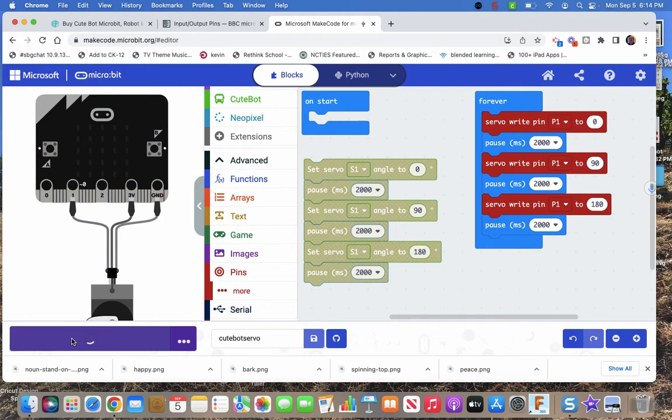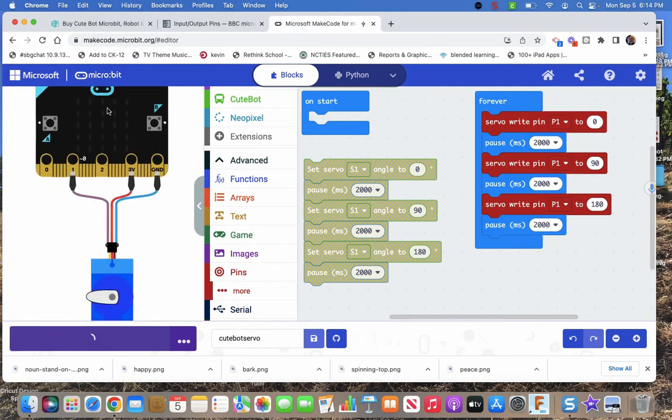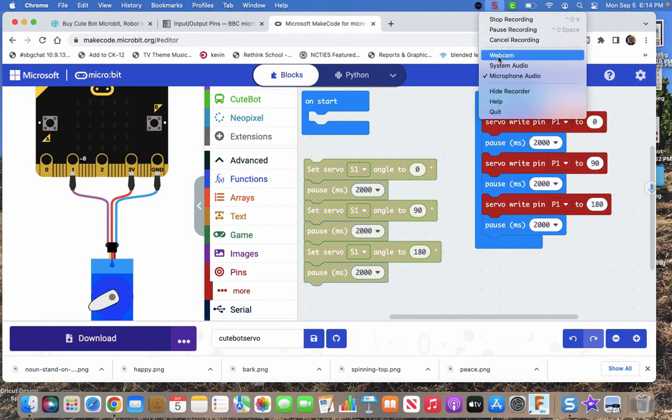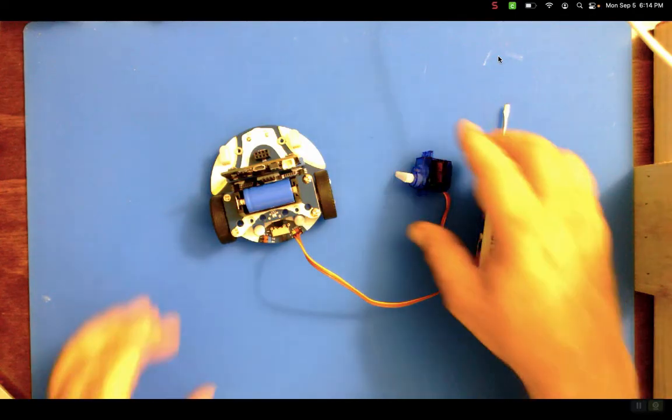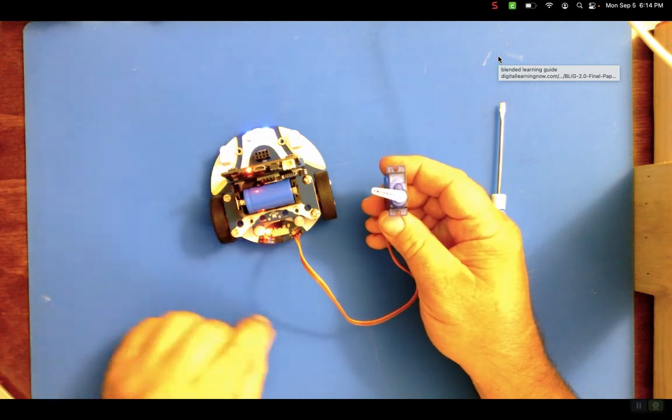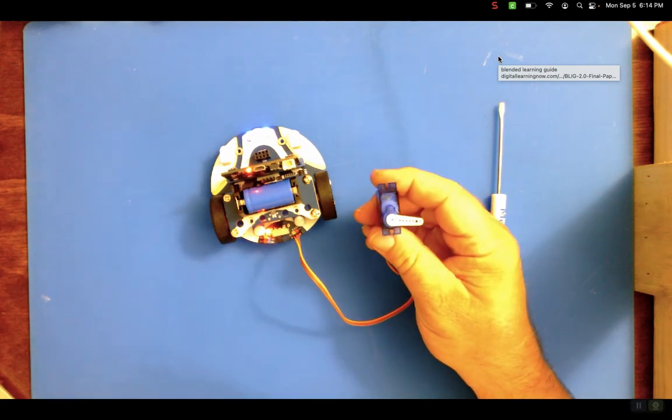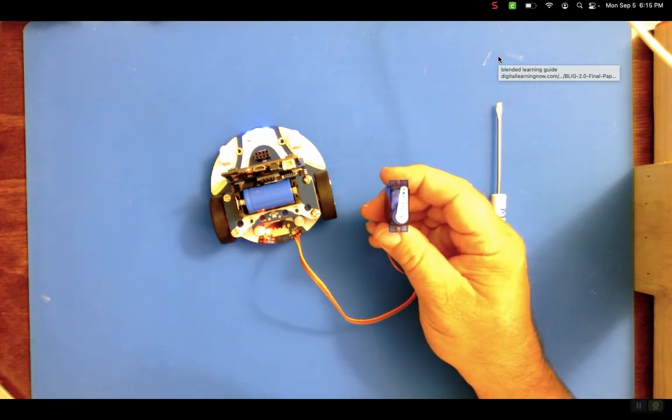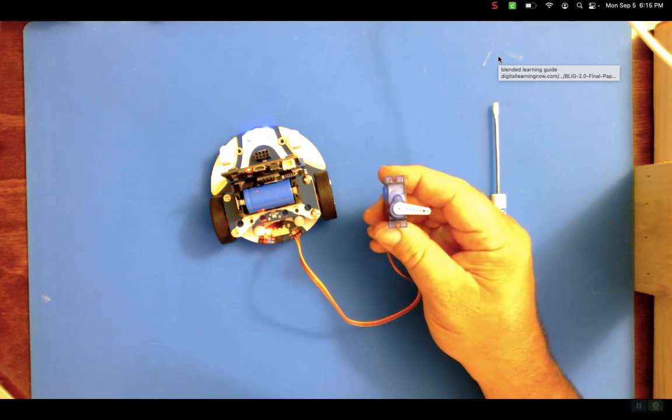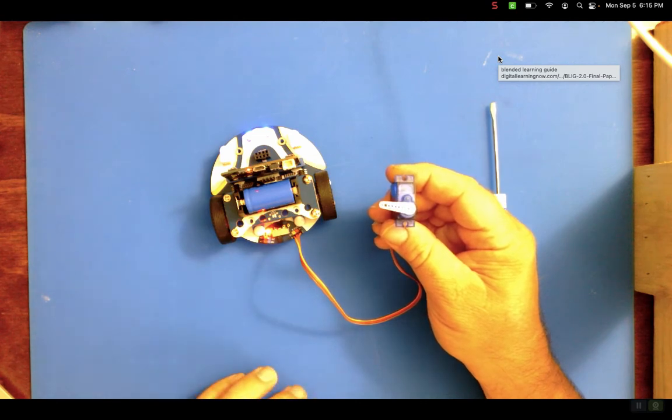Okay. One of the nice things about MakeCode is they've got that emulator on the left where you can see what should be happening. Download it. Awesome. Come on. Come back to the CuteBot. Come back to the webcam. And hold it and turn it on. There we go. 0, 90, 180.